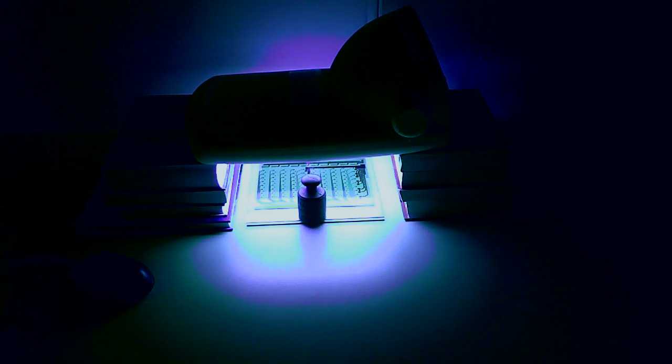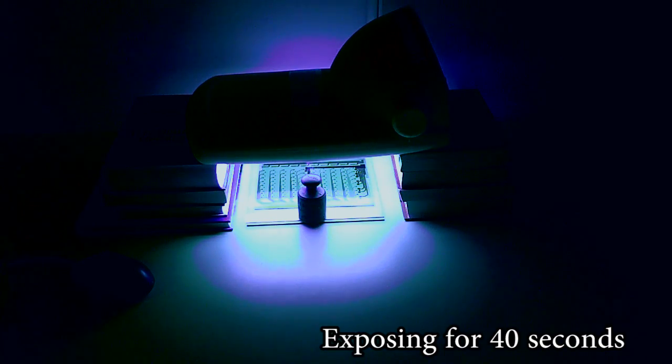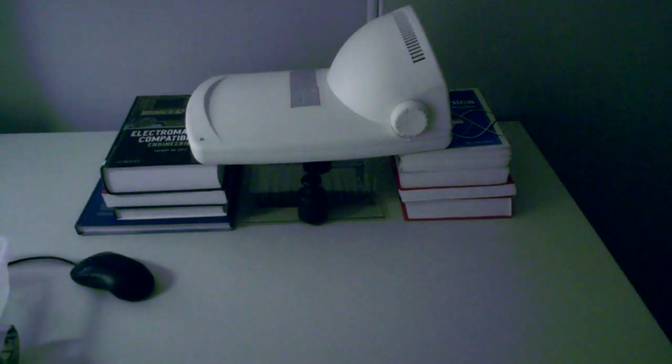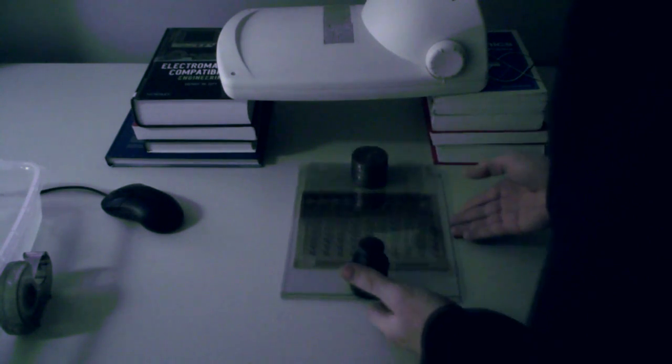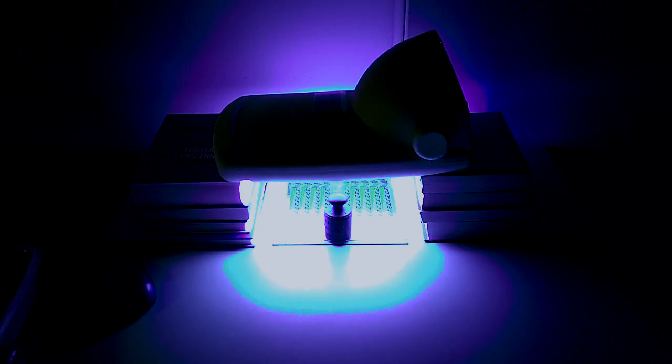The PCB is exposed to the UV light for 40 seconds, which is the time we determined during the test. After 40 seconds, I remove the glass and weights, carefully turn around the PCB, place everything back on it, and expose the other side for another 40 seconds.